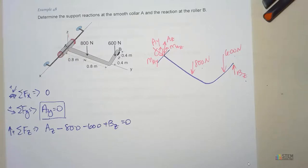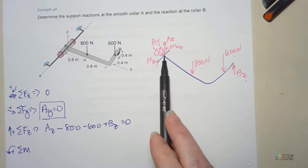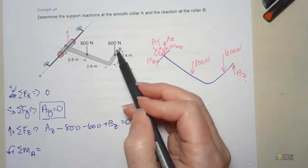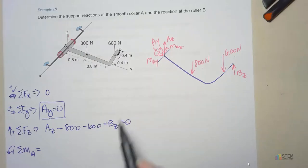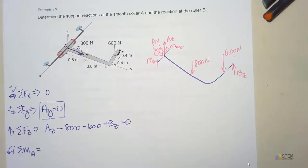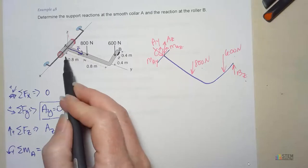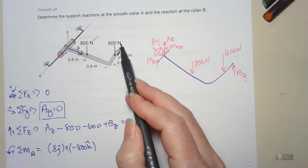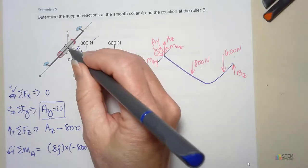I'm going to say counterclockwise is positive. We need a point to take our moment about. I'm just going to take it about point A. You could take it about point B if you wanted. If we look at point A, we need to find the moment due to each of these forces about that point. Let's start with the 800 newton force first. We're going from A to B, so I need this position vector. If you look, we're just going out 0.8 in the J direction. We'll cross that with negative 800 K. That takes care of this one.